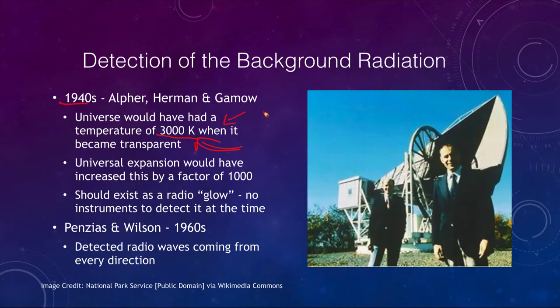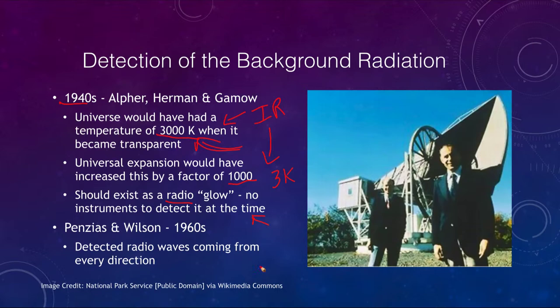Something at 3,000 Kelvin would be like a very cool star, emitting primarily in the infrared part of the spectrum, so the universe would have been glowing brightly in the infrared. However, expansion has now stretched these wavelengths by a factor of a thousand, making it more comparable to a temperature of 3 Kelvin — placing it in the radio part of the spectrum. At the time of this prediction, we didn't have the instrument sensitivity and were just beginning to build good radio telescopes.